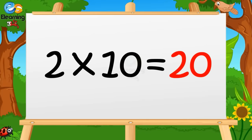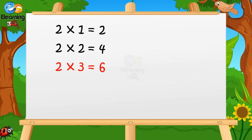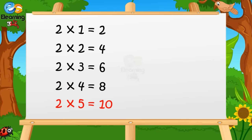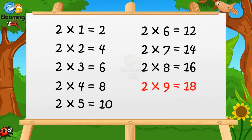2 ones are 2. 2 twos are 4. 2 threes are 6. 2 fours are 8. 2 fives are 10. 2 sixes are 12. 2 sevens are 14. Two eights are sixteen. Two nines are eighteen. Two tens are twenty.